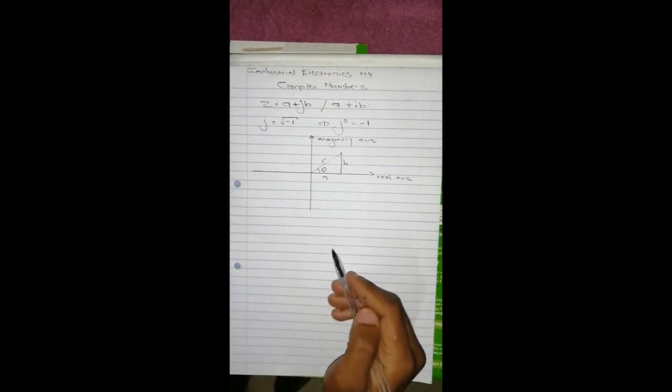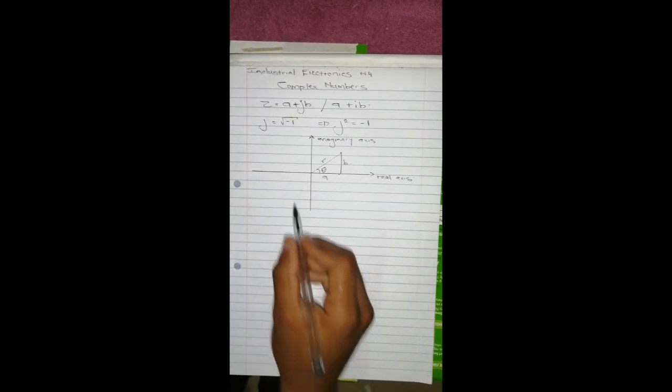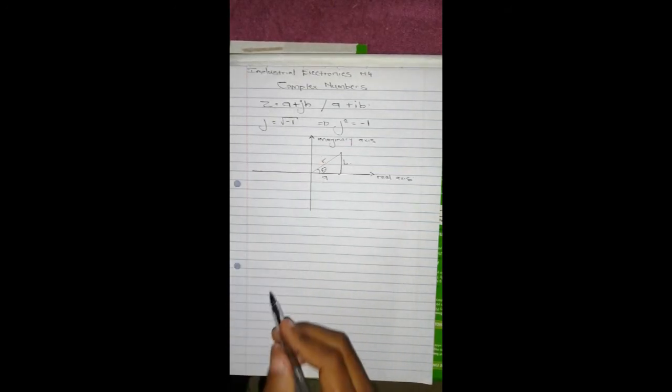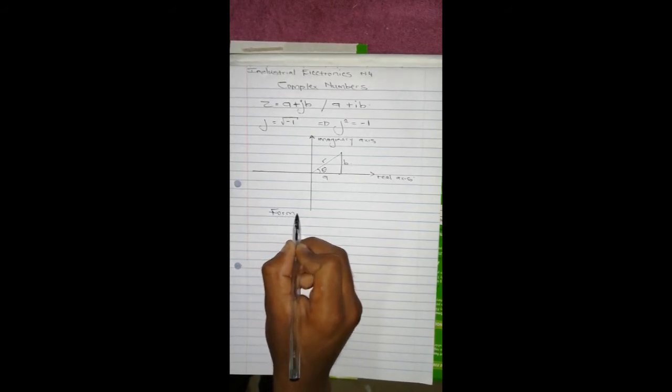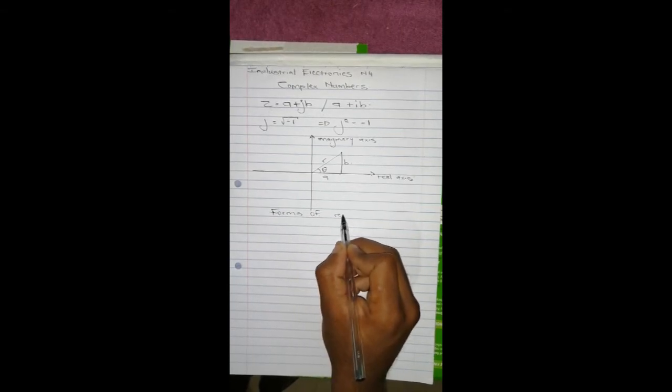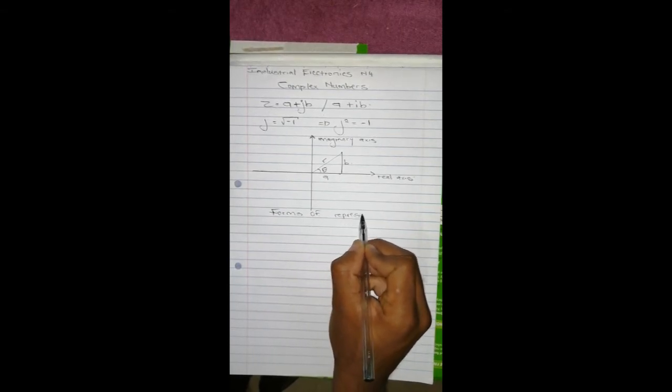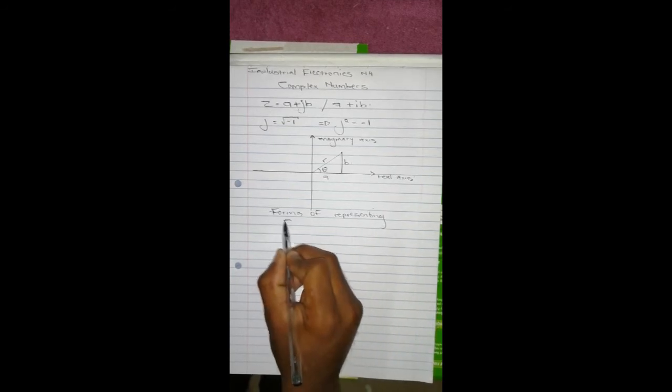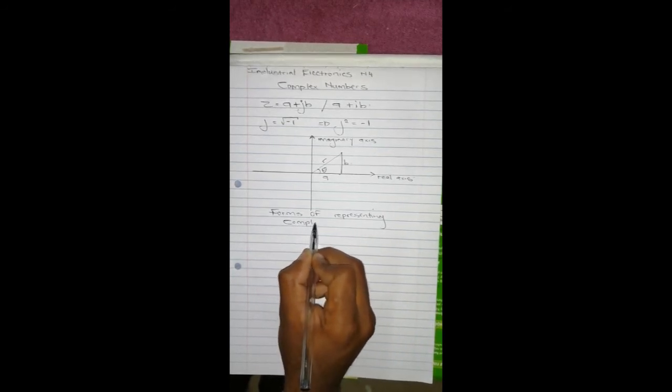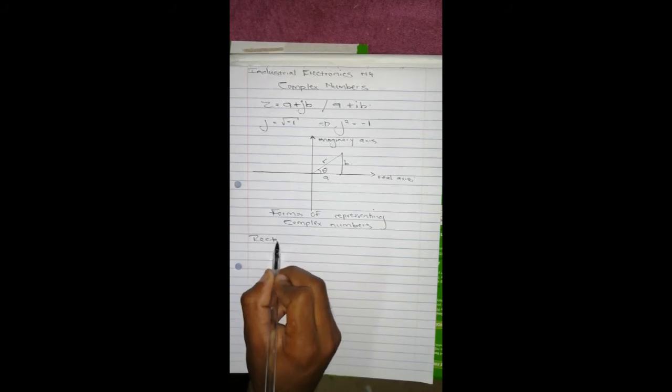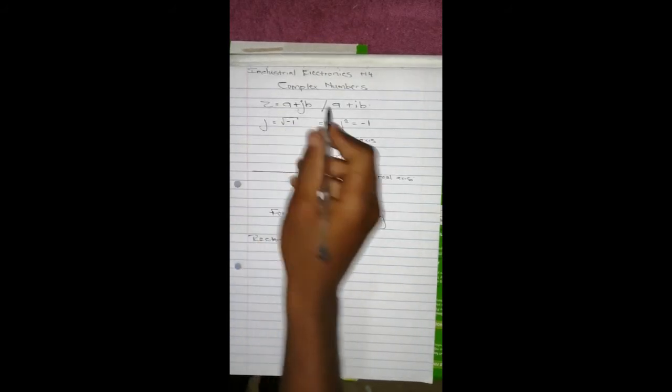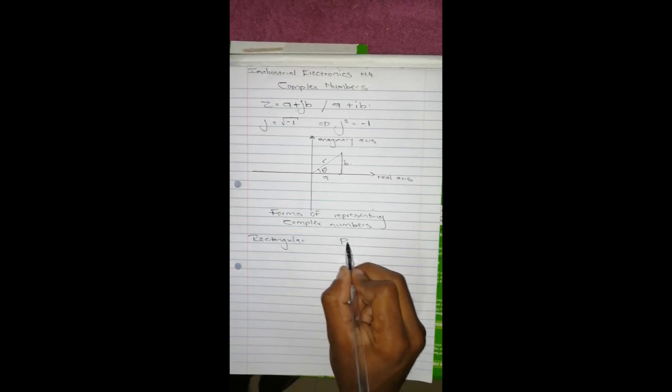And then here comes the other form of representing complex numbers, because this is a certain form which is called the rectangular form. So we can see forms of representing complex numbers, whereby the first one is the rectangular form which we all know, which we are familiar with, and the polar form.